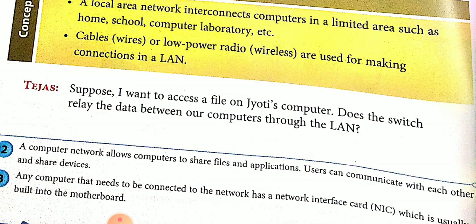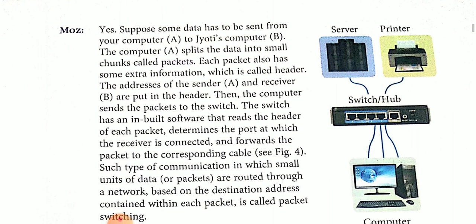Any computer that needs to be connected to the network has a Network Interface Card — it means NIC. The full form of NIC is Network Interface Card, which is usually built into the motherboard. Suppose some data has to be sent from your computer to your friend's computer. Computer A splits the data into small chunks, which are called packets. Each packet also has some extra information, which is called a header. The address of the sender A and receiver B are put in the header. Then the computer sends the packets to the switch.